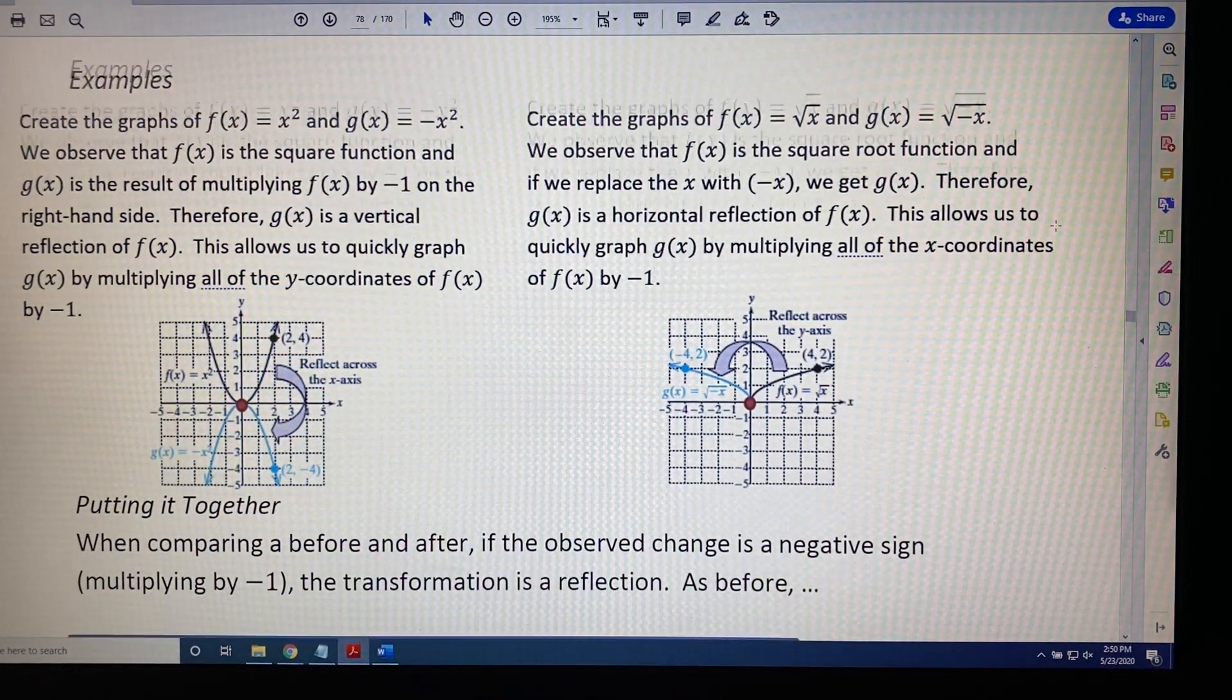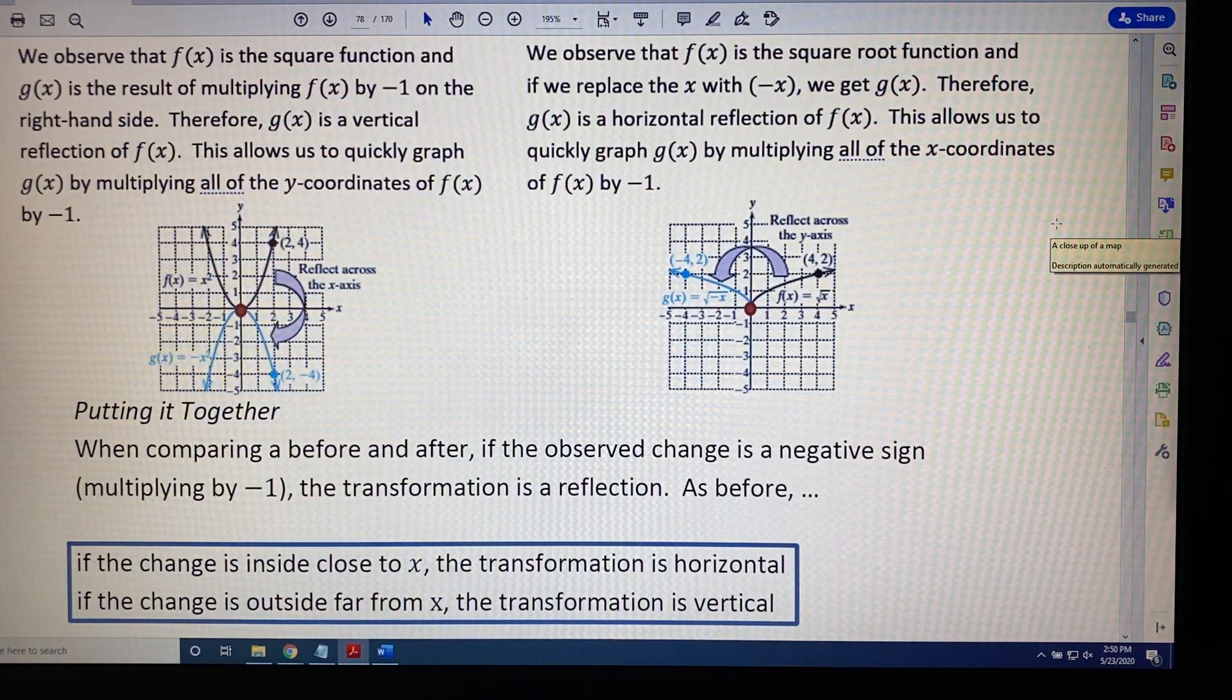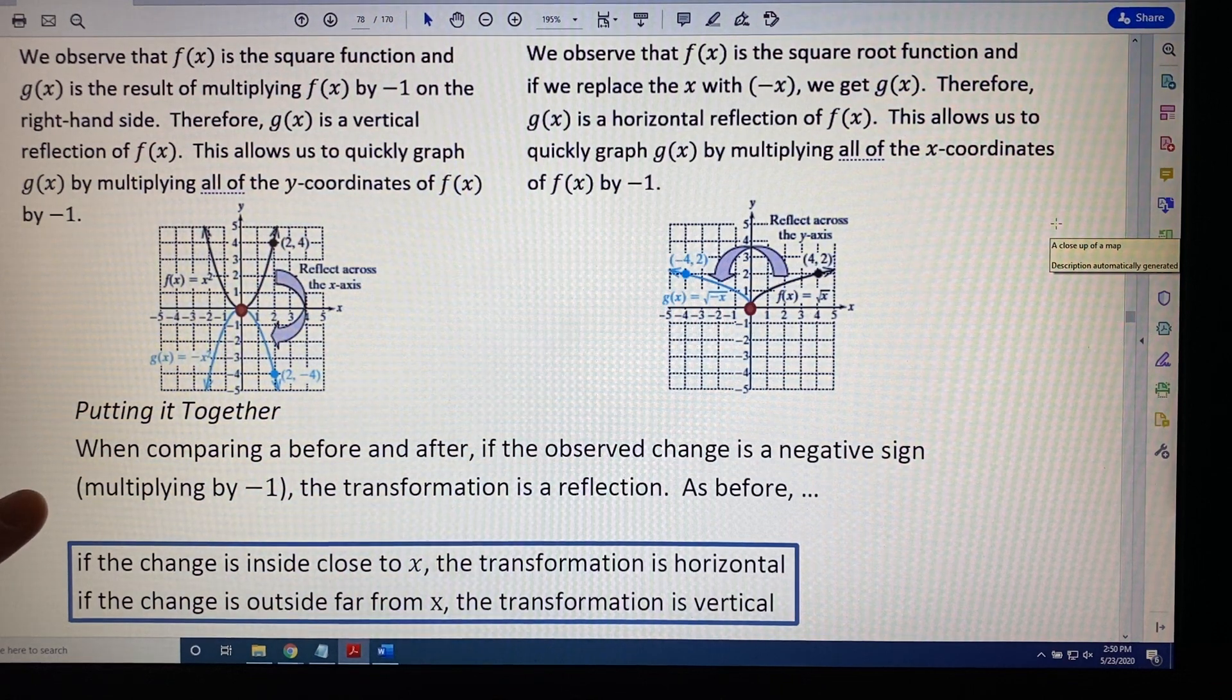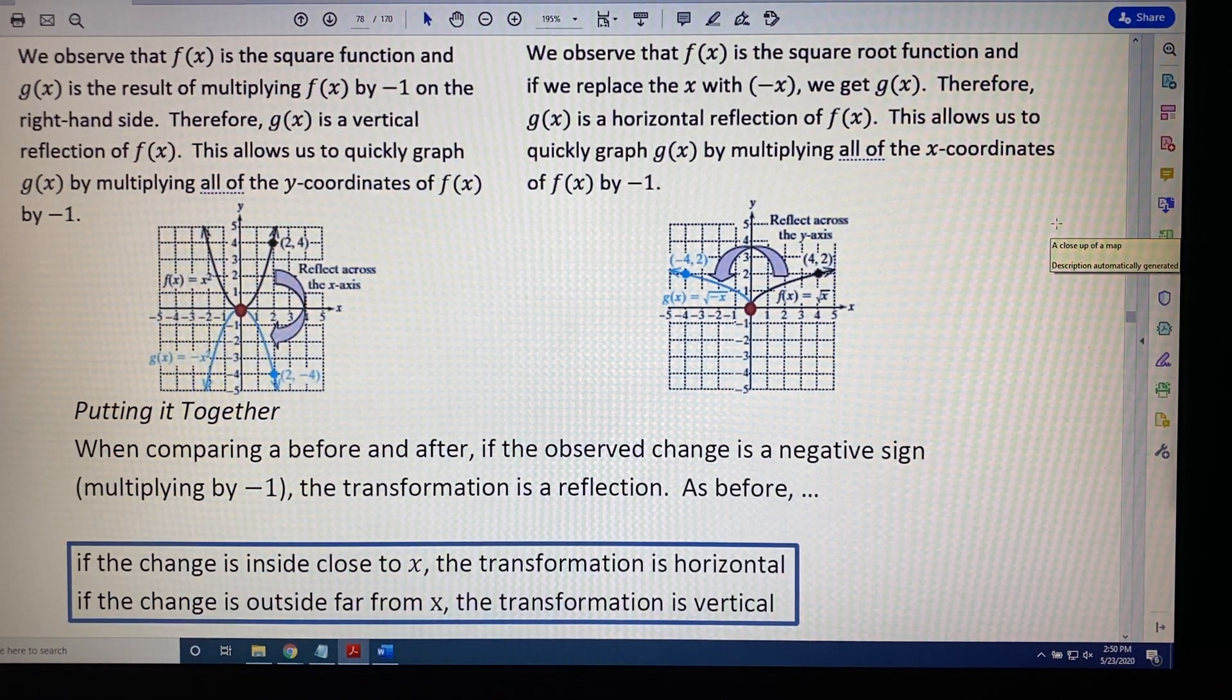All right, putting it all together. When comparing a before and after, if the observed change in the equation is a negative sign, which represents multiplying by negative 1, then the transformation type you're dealing with is a reflection.